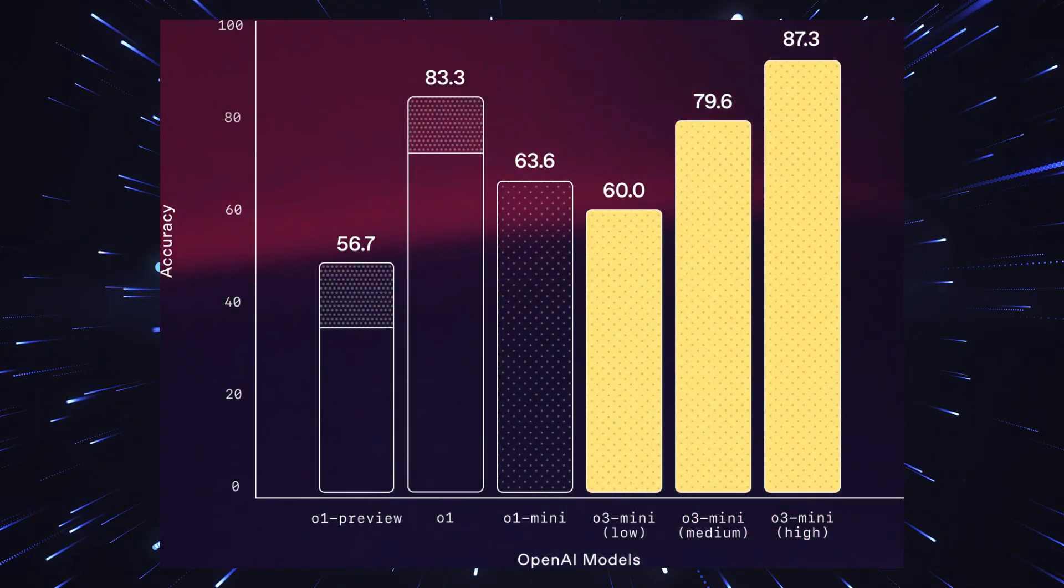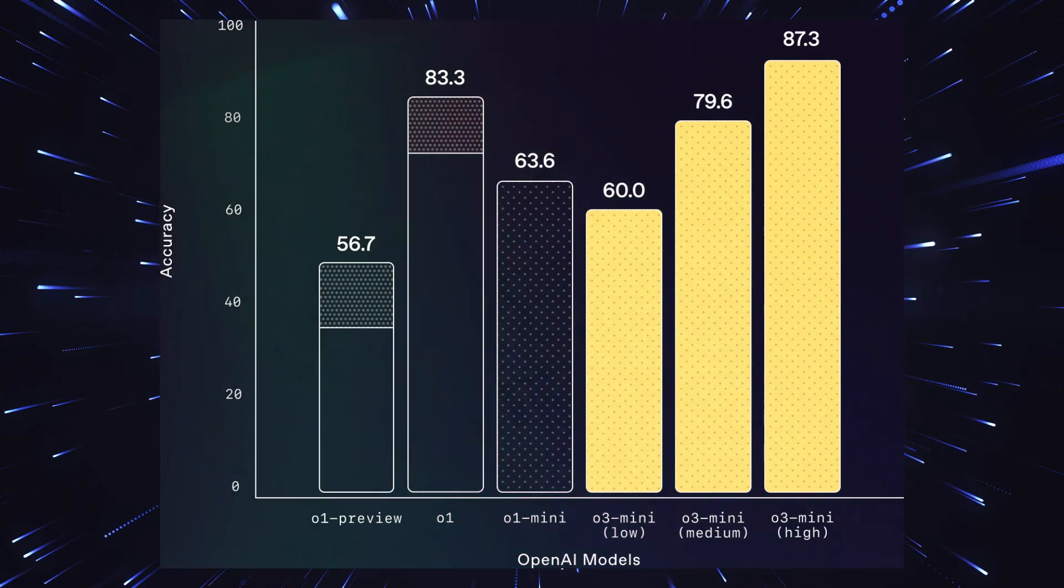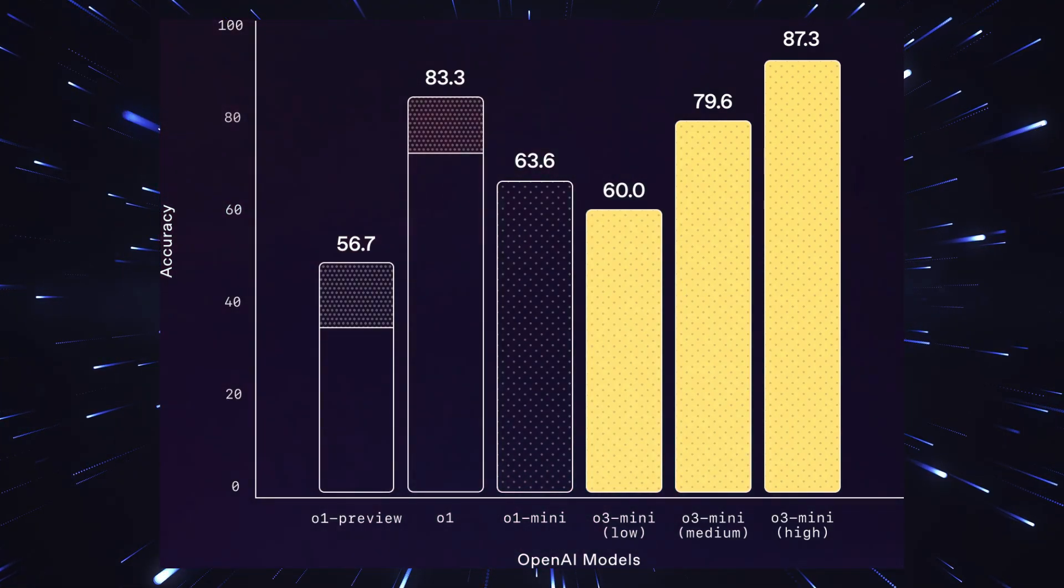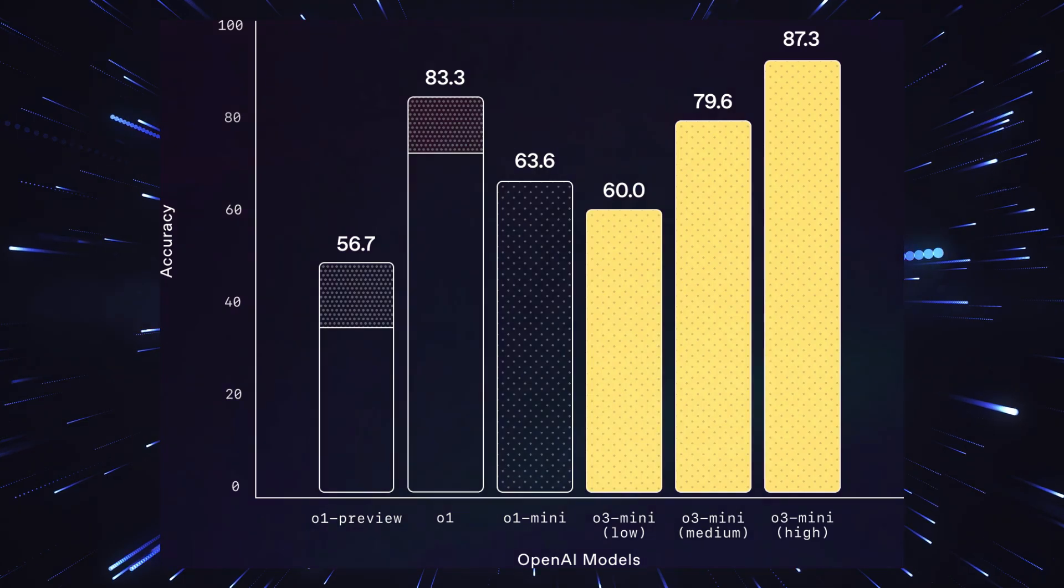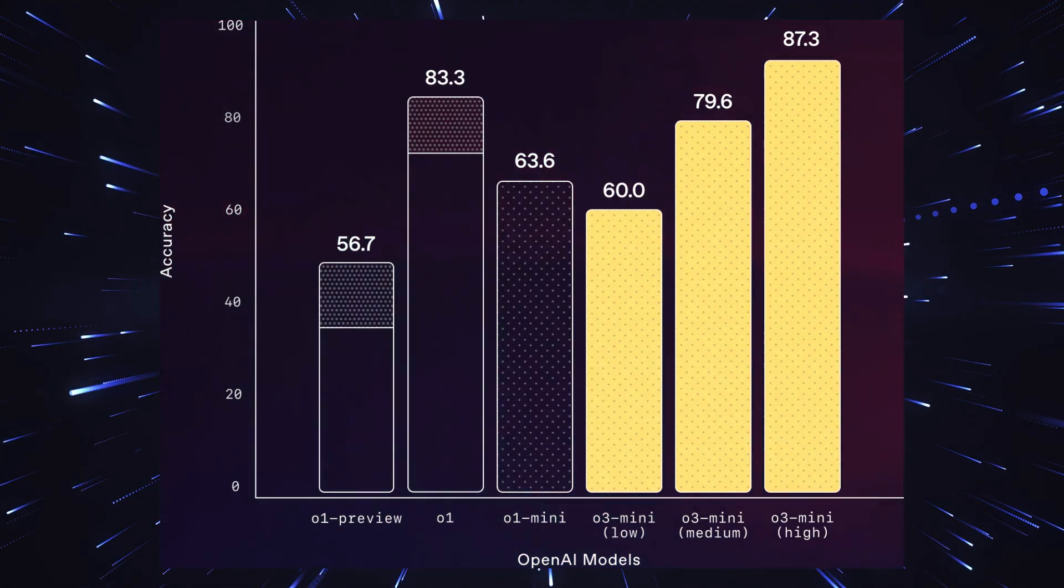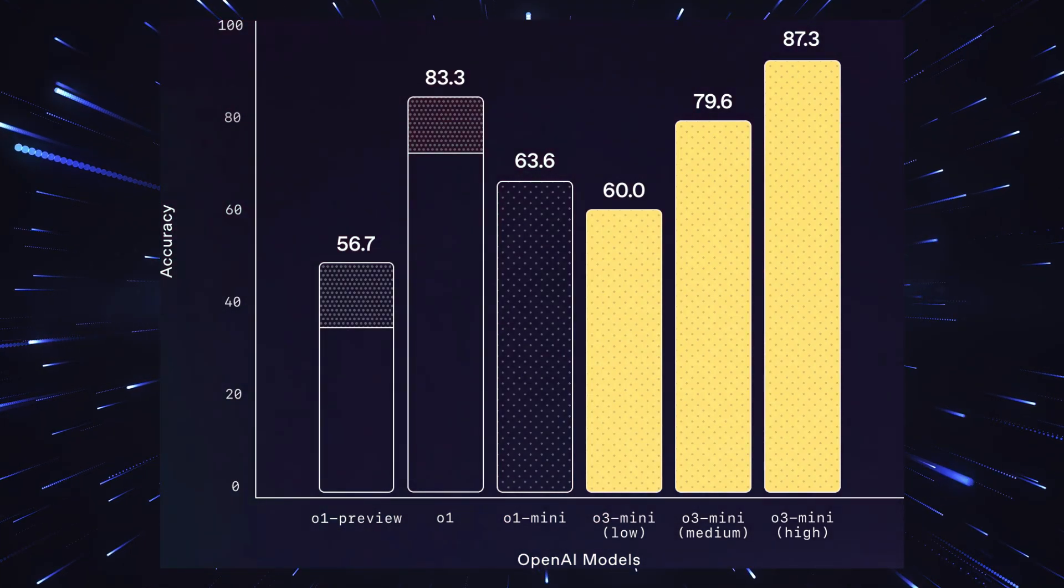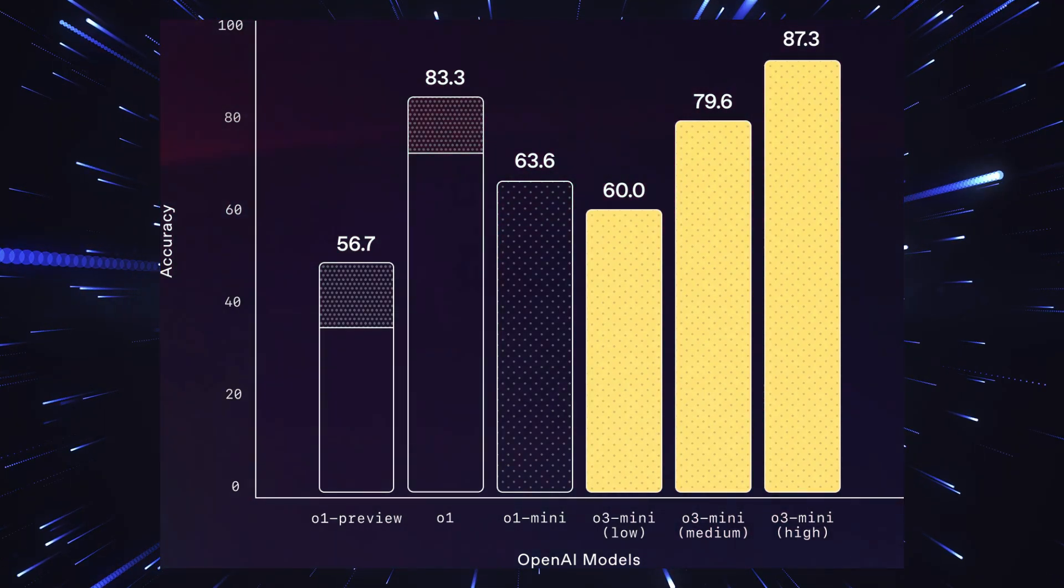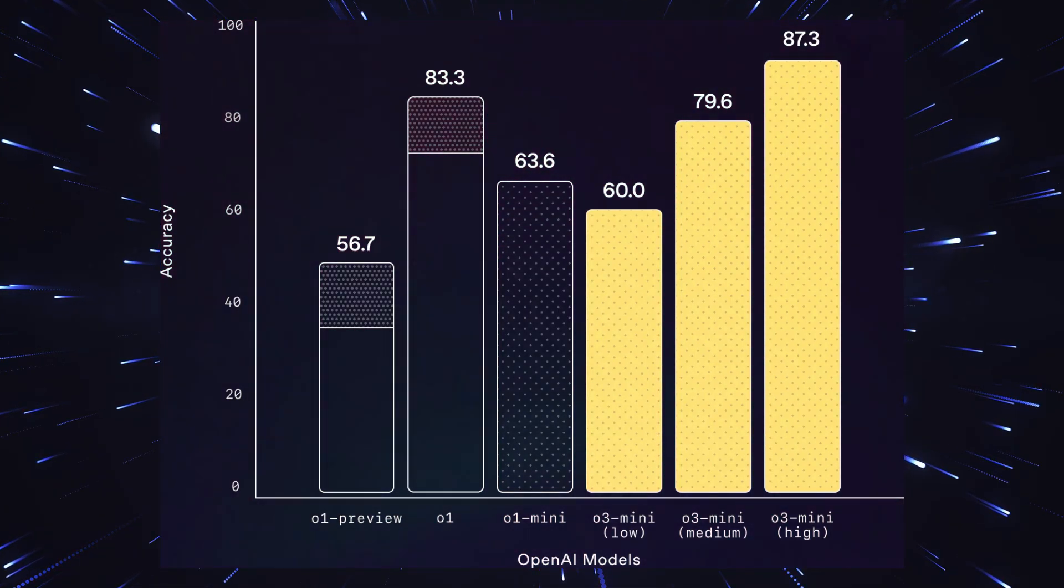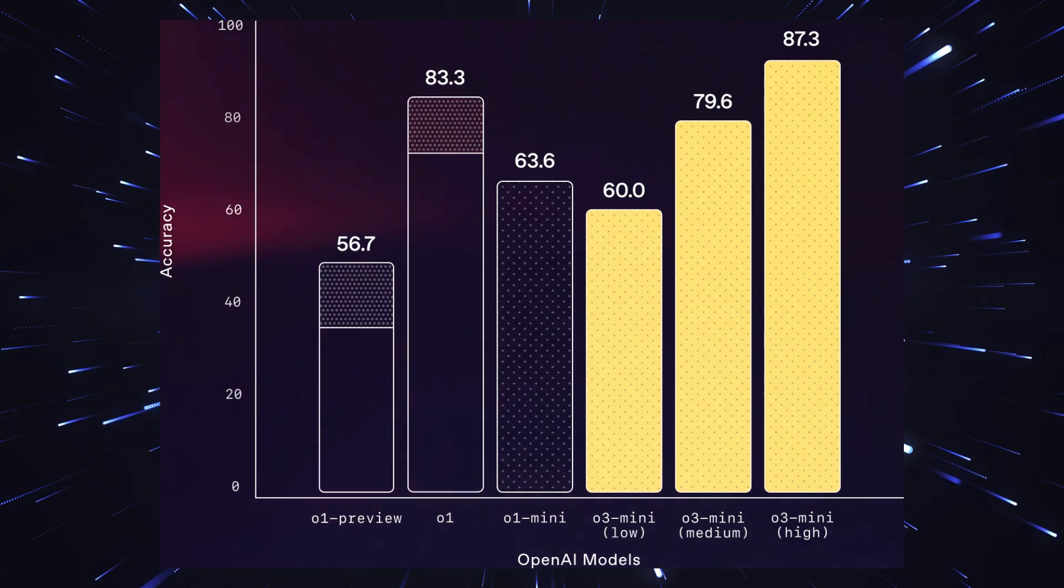Particularly impressive is also the model's ability to analyze and optimize complex systems. For example, it can examine existing code bases, make improvement suggestions and implement them immediately. Regarding the future, it's particularly exciting that O3 Mini seems to be just the beginning because if the Mini version already delivers such performance, we can hardly imagine what the full O3 model will be capable of.